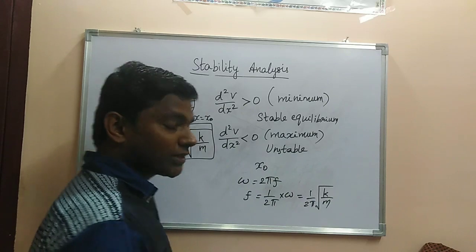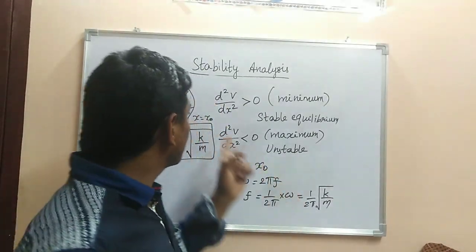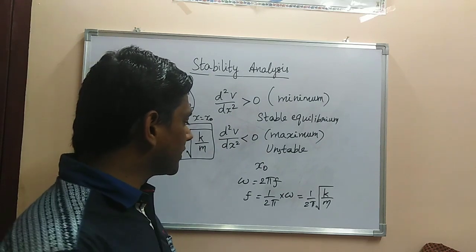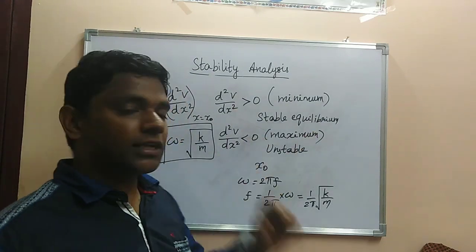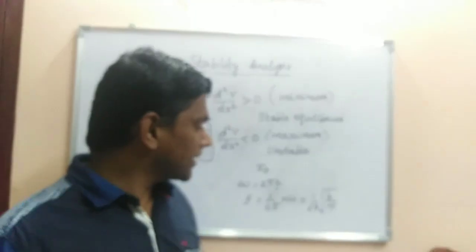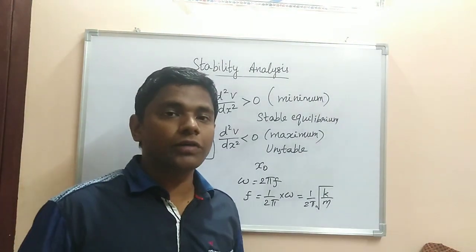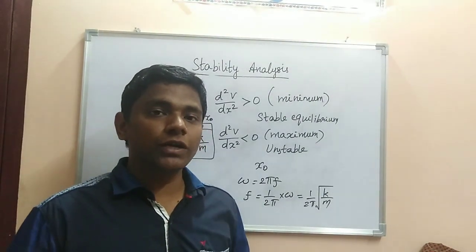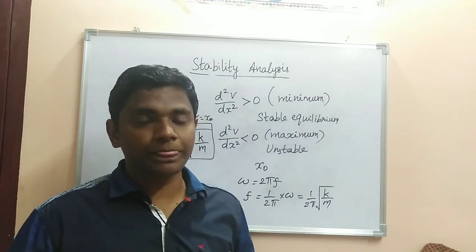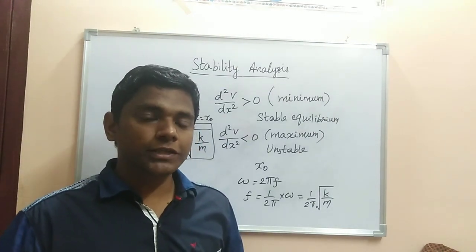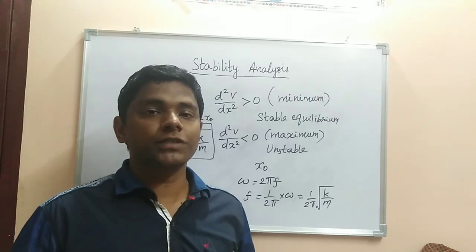So f = (1/2π)√(k/m). In both these formulas, m is the mass of the particular body. Using d²V/dx² you can tell whether the body is in stable or unstable equilibrium, and then use ω = √(k/m) to determine the angular frequency of oscillations about the equilibrium point.